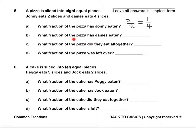What fraction of the pizza has James eaten? He has eaten 4 out of the 8 pieces, or 1 half in simplest form. What fraction of the pizza did they eat together? 2 eighths plus 4 eighths is 6 eighths, which in simplest form is 3 quarters.